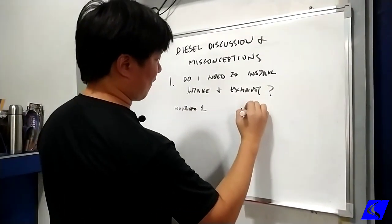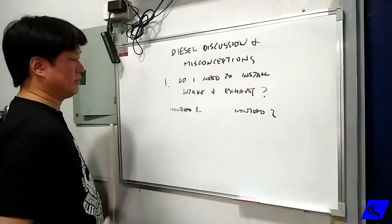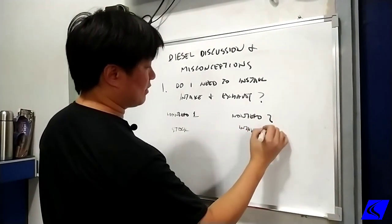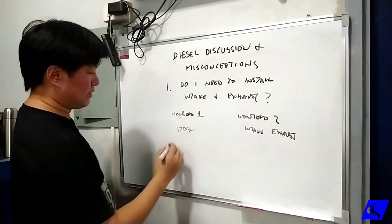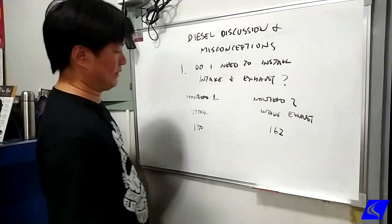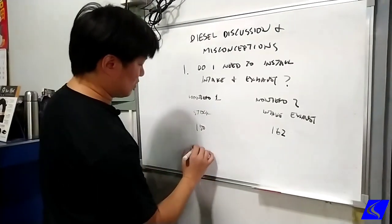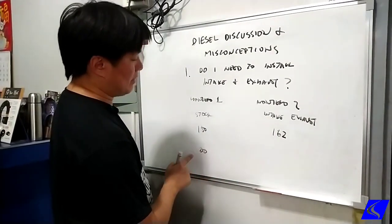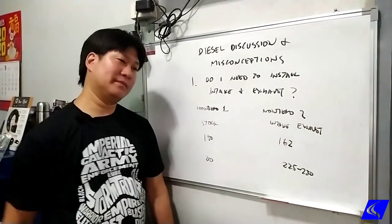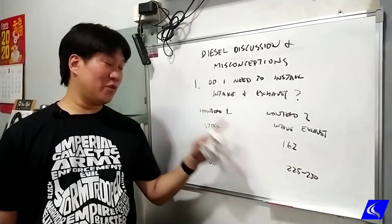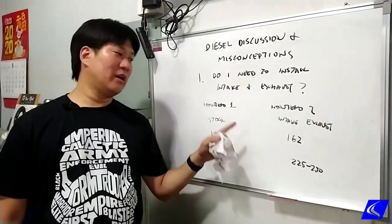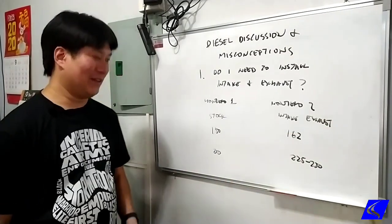Let's take for example Montero one, Montero two - this one stock, this one has intake and exhaust. So let's say stock we have 150 horse, with intake and exhaust we're at around 162 horse. When we remap both, this will reach around 210, this one with everything being the same, all the settings, this one will be around 225 maybe 230. So yes, there is a difference if you remap between stock and if you have mods like intake and exhaust - you will get more horsepower and you will maximize it more.